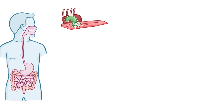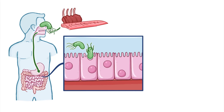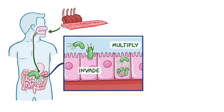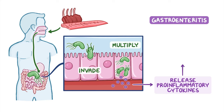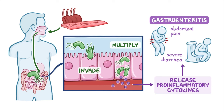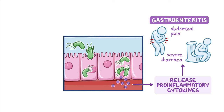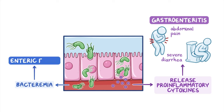When the bacteria are ingested, they travel through the digestive tract, invading and multiplying in intestinal cells. Infected cells then release pro-inflammatory cytokines, causing an inflammatory response. This results in gastroenteritis, or inflammation of the intestinal tract, causing abdominal pain and severe diarrhea. The bacteria can also enter the blood, termed bacteremia, and cause enteric fever.